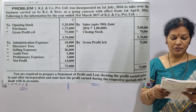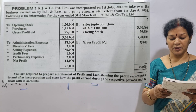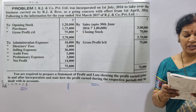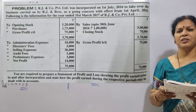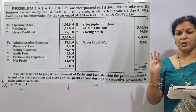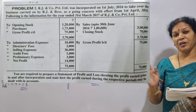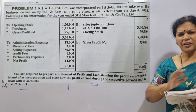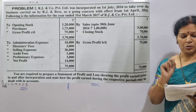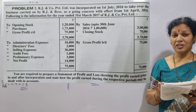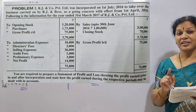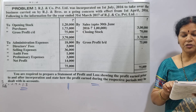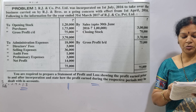The following is the information for the year ended 31st March 2017 of RJ & Company Pvt Ltd. We have a trading and profit and loss account with opening stock on the debit side. Sales up to 30th June 2016 are 1 lakh; actual total sales are 3 lakh.